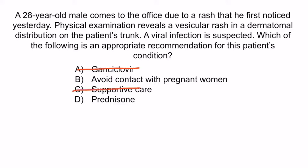D is incorrect because glucocorticoids have shown no clinical benefit in patients with shingles, so prednisone would not be recommended. The correct answer is B — avoid contact with pregnant women. And with that, we've covered everything you need to know regarding VZV.